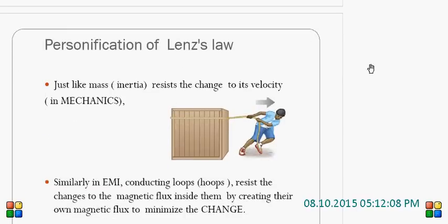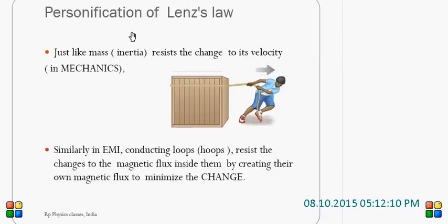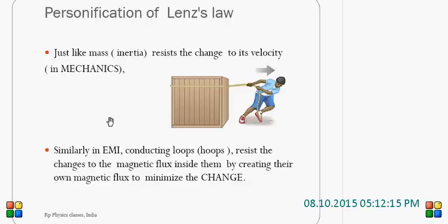How to understand Lenz's law? We can understand it just like mass resists the change to its velocity in mechanics due to inertia — Newton's first law. In electromagnetic induction also, conducting loops or hoops resist the change to the magnetic flux inside them by creating their own magnetic flux to minimize the change.